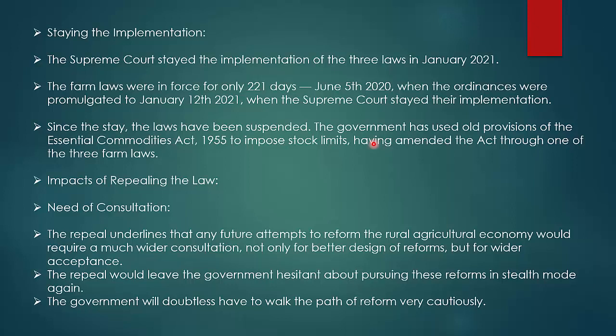The Supreme Court stayed the implementation of the three laws in January 2021. The farm bill was given in 2020 and protests started immediately. The Supreme Court was skeptical about why the government was so fast to implement the farm bill during a lockdown. The farm laws were in force for only 221 days — from June 5, 2020, when the ordinances were promulgated, to January 12, 2021, when the Supreme Court stayed their implementation.